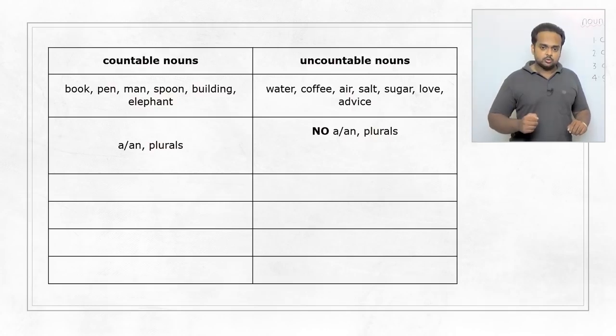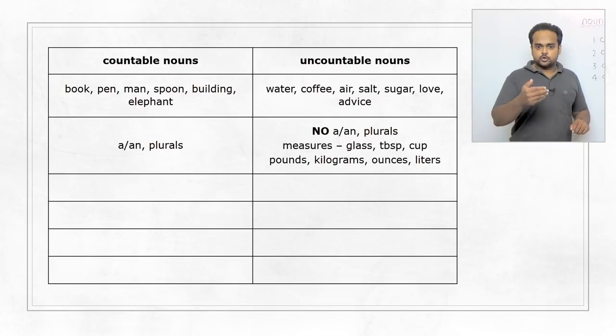But we can use units to talk about quantity. For example, we can say a glass of water or two glasses of water, six tablespoons of sugar, or a cup of coffee, five cups of coffee. Or we can use units of volume or weight like pounds, kilograms, ounces and liters. This is how we talk about the quantity of uncountable nouns.